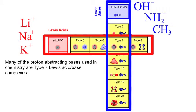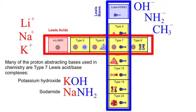Indeed, many of the proton abstracting Bronsted bases used in chemistry are type 7 complexes. For example, potassium hydroxide, sodamide NaNH2, and methyl lithium, where methyl lithium is a super base.